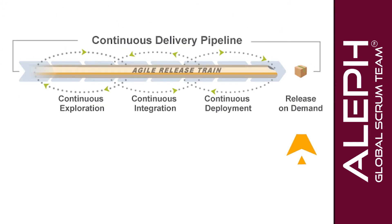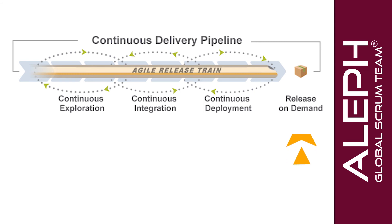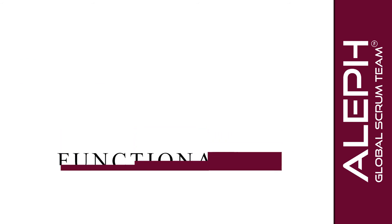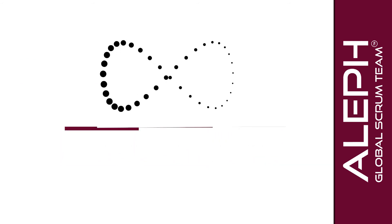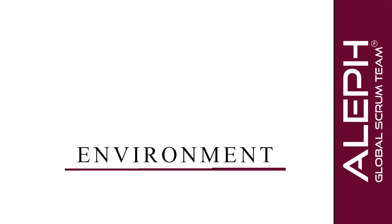Release on demand is the last part of the continuous delivery pipeline. It develops new functionality that has been validated and releases it either immediately or incrementally based on demand, ensuring that new functionality is continuously readied and verified in the production environment.